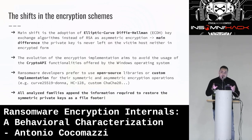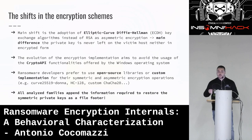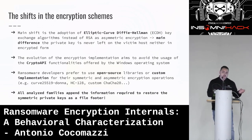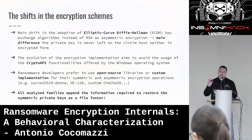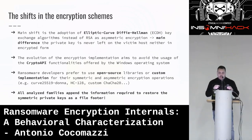The first and main evolution is in the encryption schemes these threats are using. The main shift is that they are no longer using RSA as asymmetric encryption but are using Elliptic Curve Diffie-Hellman. The main difference is that with Elliptic Curve Diffie-Hellman, the private key used to encrypt the files is never stored on disk, not even in encrypted form. I will go deep on this concept in the next slides.